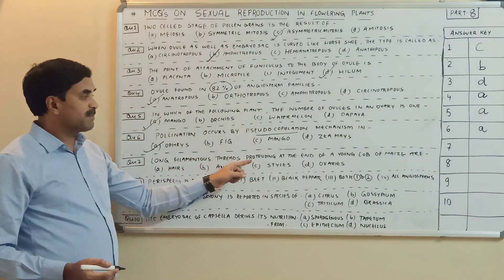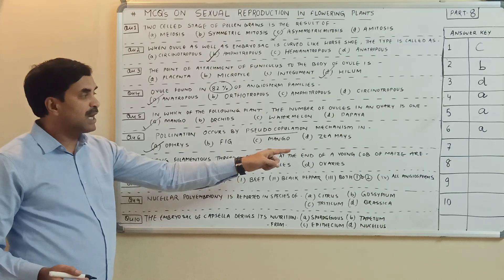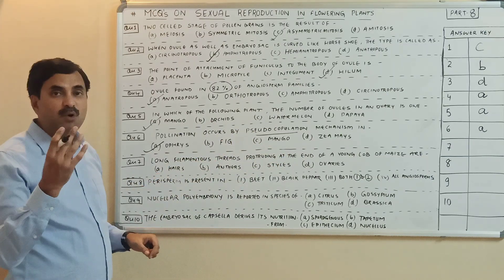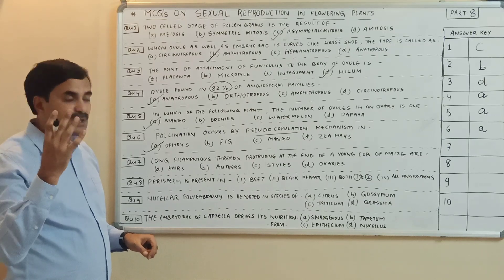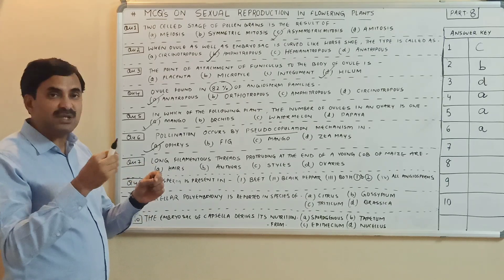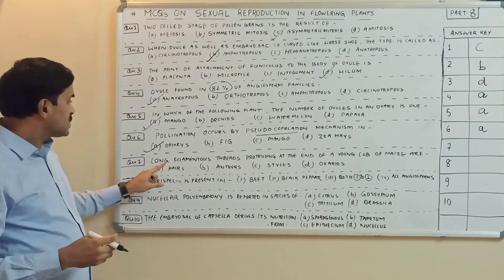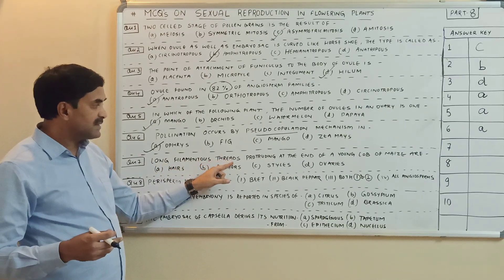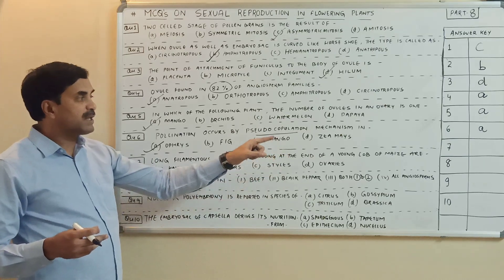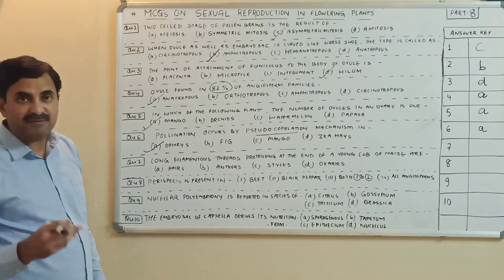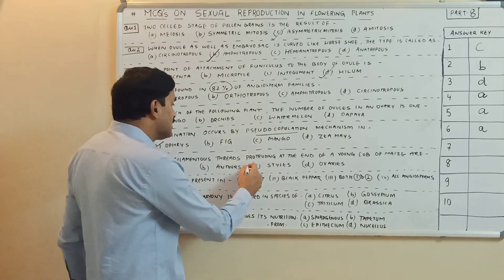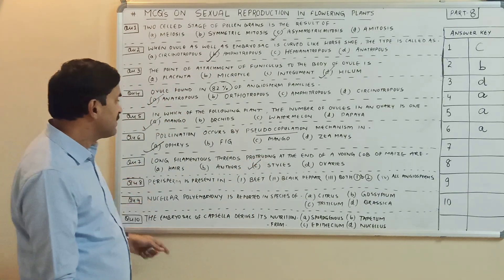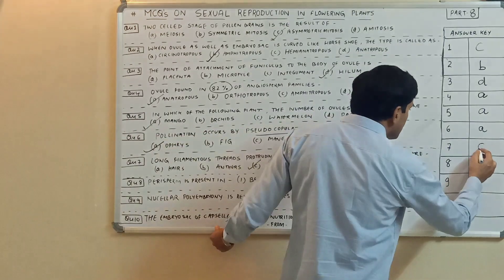Long filamentous threads protruding at the end of a young cob of maize are? If you have seen the corn cob or maize cob, certain silky structures are present. These long filamentous threads protruding at the end of a young cob of maize are golden in color and they are the styles. Question number seven has the answer C.